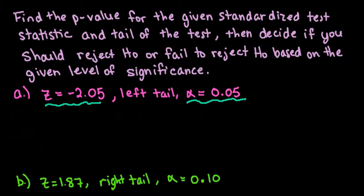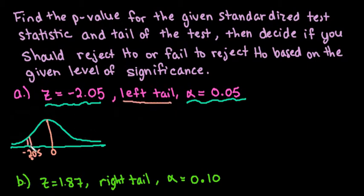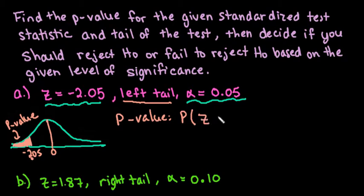Since we have a z-score, we're dealing with a normal curve, so it's always a good idea to sketch a picture. The negative 2.05 would be to the left of zero. If it's a negative z-score, it's to the left of the center. The left tail tells us which tail to shade. Our p-value is the area to the left of the standardized test statistic, the probability that z is less than negative 2.05.